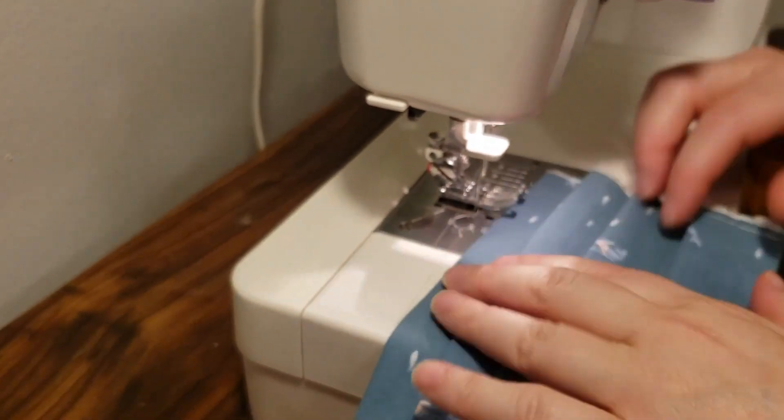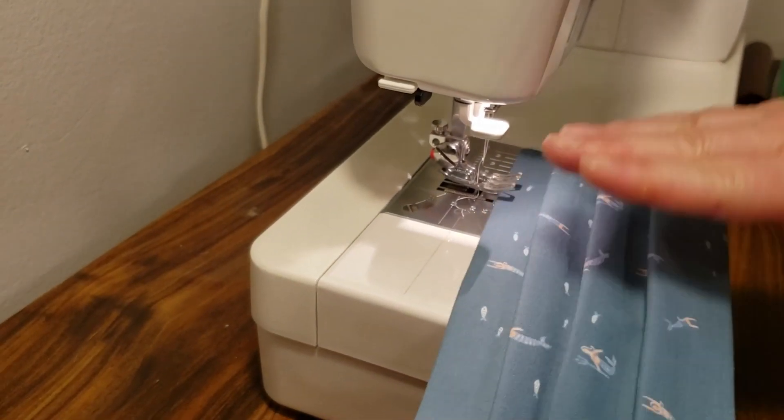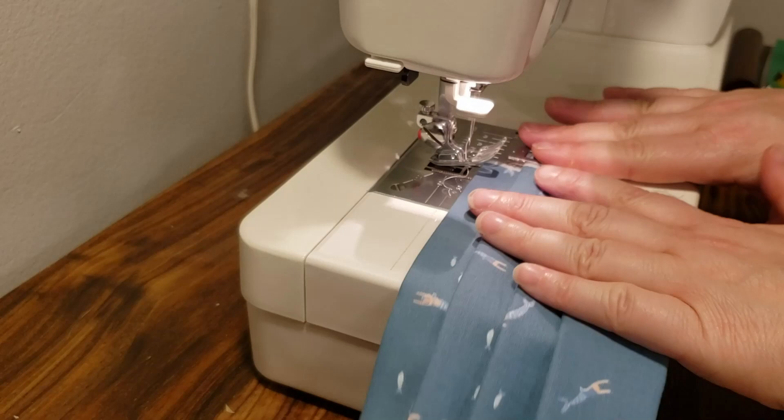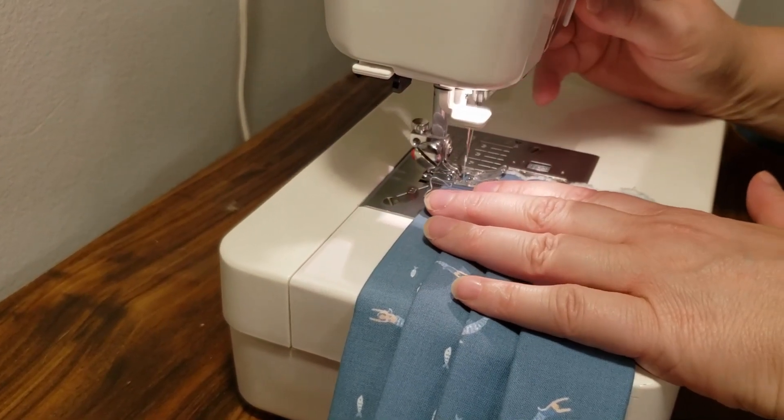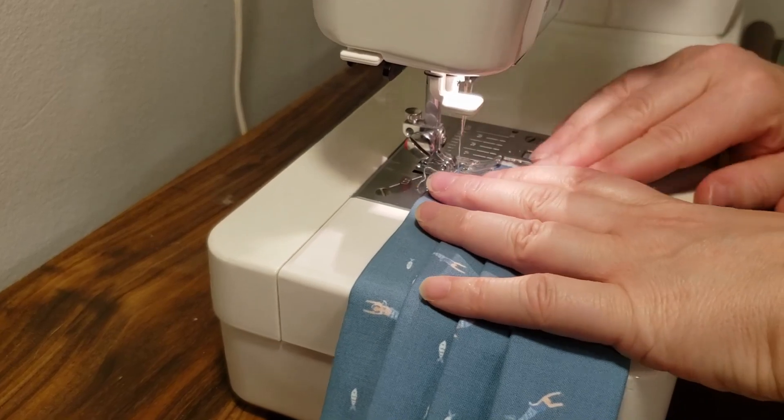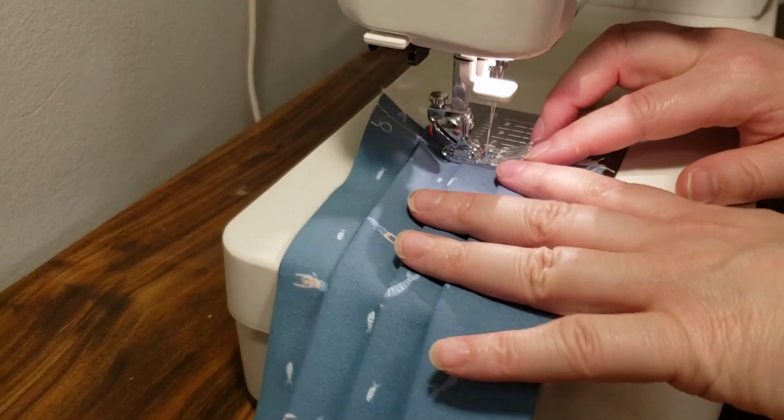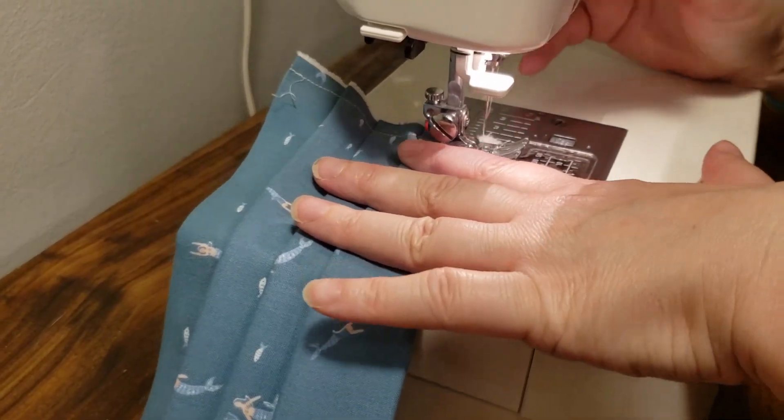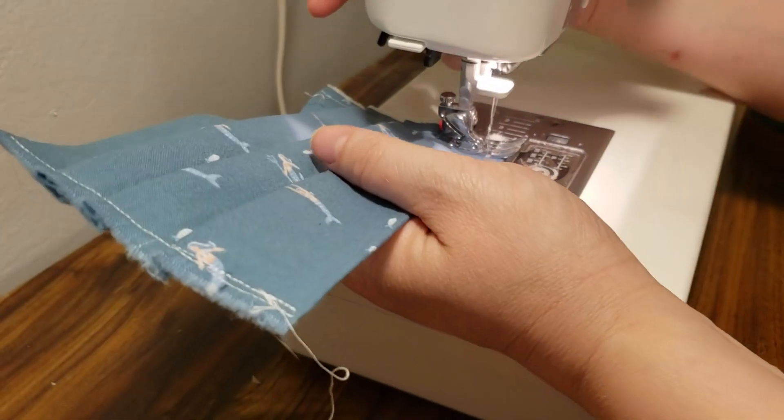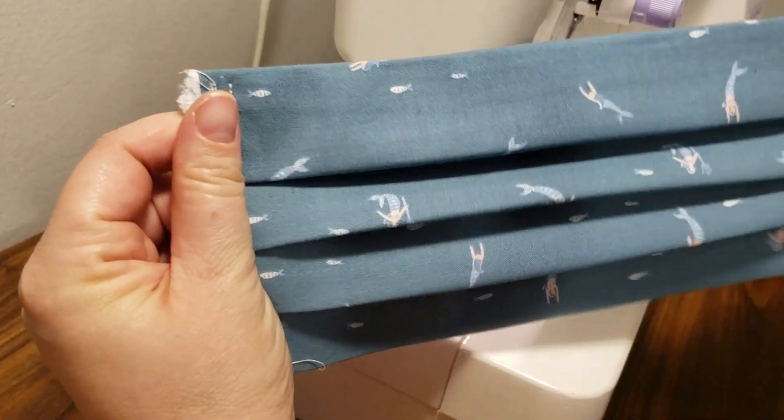Do the same on the other side, so just kind of make sure it's lined up and everything is still pleated on this side as well. Backstitch, go right over those, hold them tight, and backstitch, and there you go. There you go. There's your pleated mask.